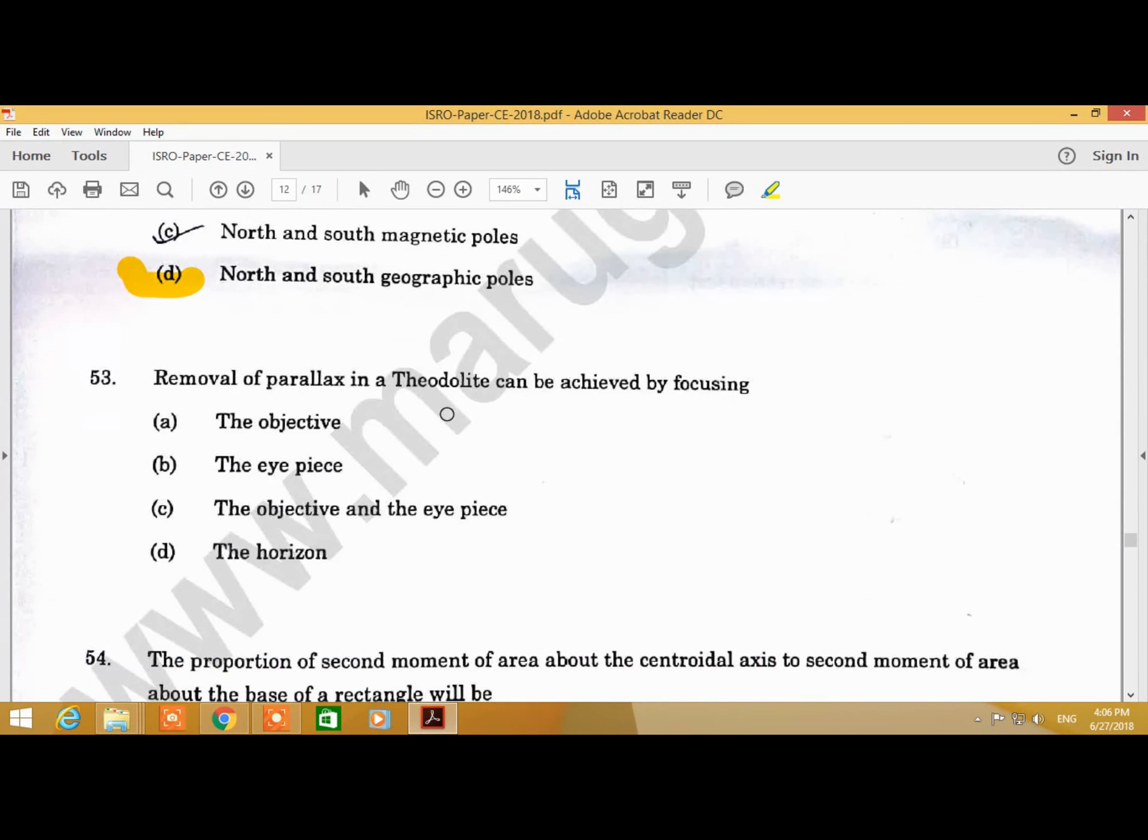Question Number 53: Removal of parallax in a theodolite can be achieved by focusing the. Answer is C, the objective and the eyepiece.